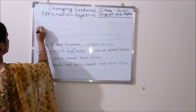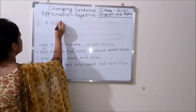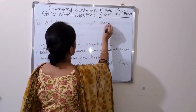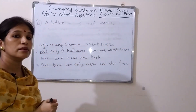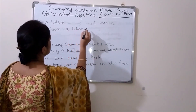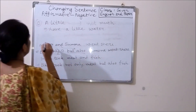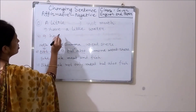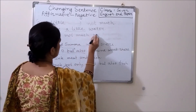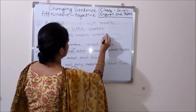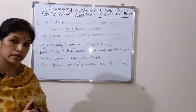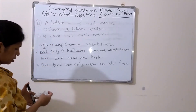Rule number 12. When we get 'a little' in an affirmative sentence, we have to use 'not much' to make the sentence negative. For example: 'I have a little water.' In negative: 'I have not much water.'